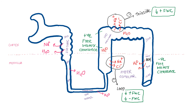Thus, thiazide diuretics decrease only positive free water clearance, while loop diuretics decrease both positive as well as negative free water clearance. Is there any other group of drugs which can also reduce negative free water clearance? The answer is aquaretics, like vaptans, which are vasopressin V2 receptor blockers. They inhibit water reabsorption from the collecting ducts and hence decrease negative free water clearance, or simply increase free water excretion.